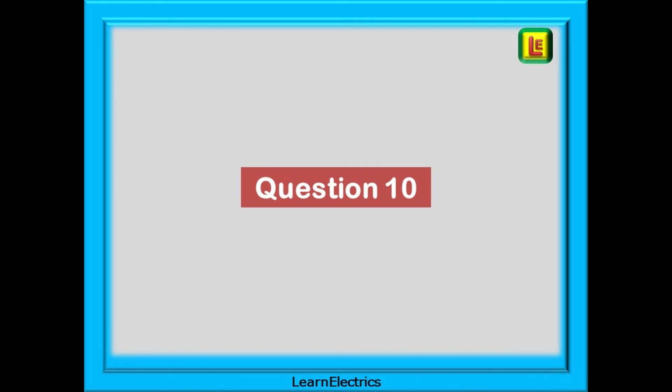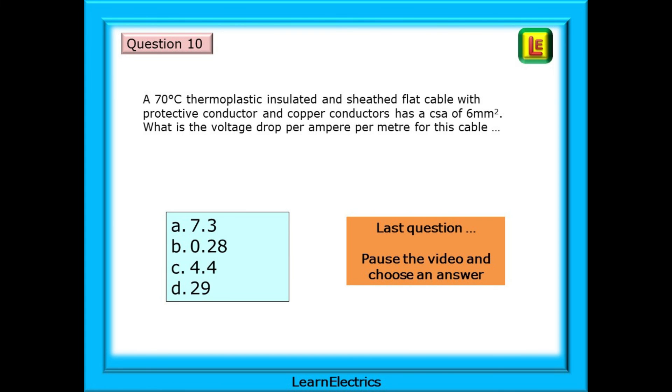And now, question 10. The last question in this help video. A 70 degree Celsius thermoplastic insulated and sheathed flat cable with protective conductor and copper conductors has a CSA of 6 square millimetres. What is the voltage drop per ampere per metre for this cable? There is no calculation to be done. Just find the table and answer the question.